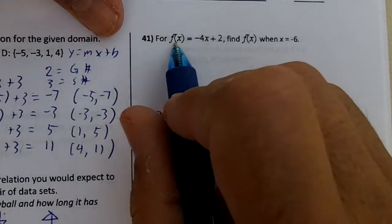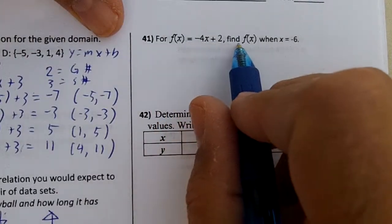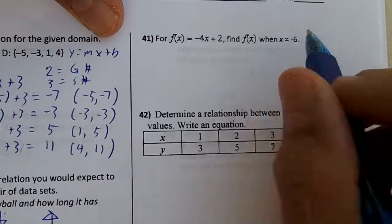Number 41. For f of x equals negative 4x plus 2, find f of x when x equals negative 6.